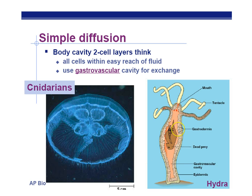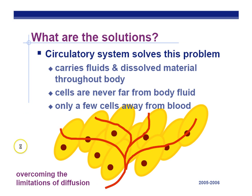The Hydra digests prey like Daphnia — an almost microscopic animal — with enzymes, and nutrients diffuse right into their cells. However, more complex animals need a circulatory system to solve this problem. The circulatory system carries fluids and dissolved materials throughout the body, efficiently delivering substances to all cells and overcoming the limitations of diffusion.